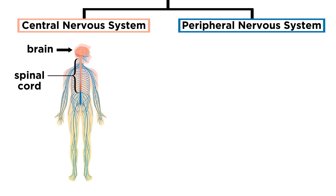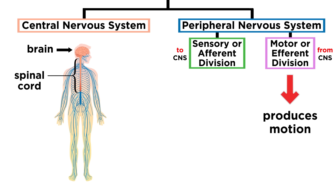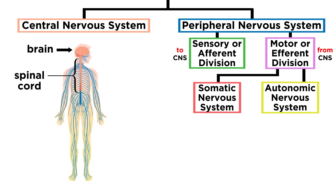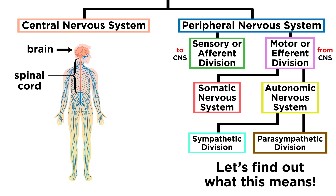As we already learned, the peripheral nervous system is divided into the sensory division and motor division. The latter is what produces motion, and this is divided into the somatic nervous system and autonomic nervous system. The autonomic nervous system is in turn divided into a sympathetic division and a parasympathetic division.